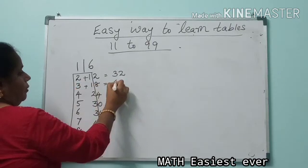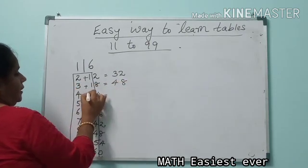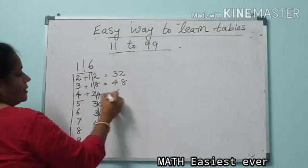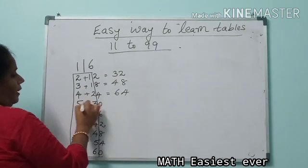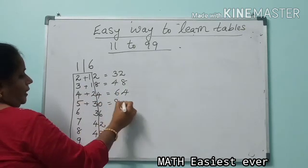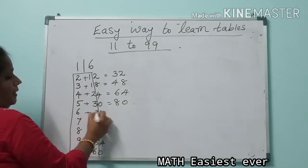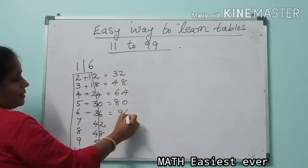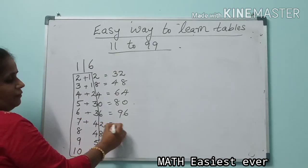Now 3 plus 1 is 4, write 48. 4 plus 2 is 6, write this 4. 5 plus 3 is 8, write this 0. 6 plus 3 is 9, write this 6. 7 plus 4 is 11, write this 2.